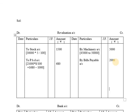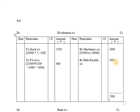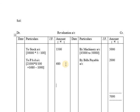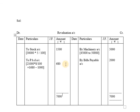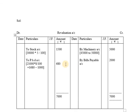The total of 7,000 will be recorded on both sides of the revaluation account. Subtracting 2,180 from 7,000: subtracting 2,000 from 7,000 gives 5,000; subtracting 1,800 gives 4,900; then subtracting 80 gives 4,820. So the profit of 4,820 is transferred to the old partners.